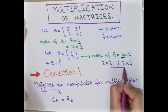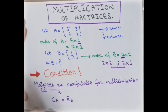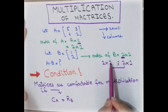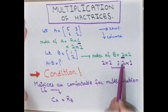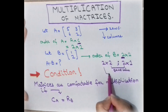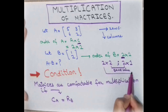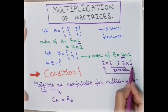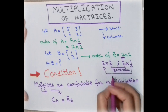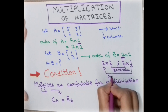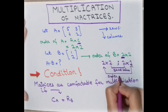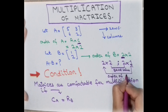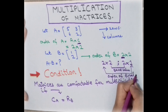Since the number of columns of the first matrix equals the number of rows of the second matrix — both are 2 — the matrices can be multiplied. The remaining values give the order of the final matrix.